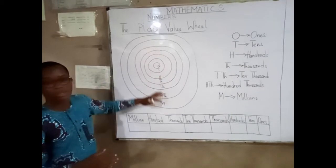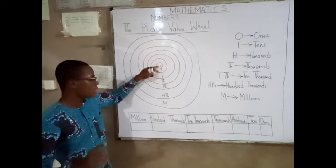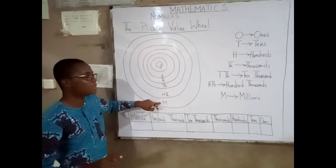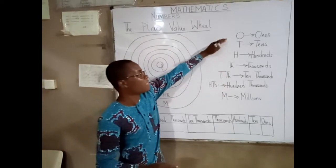You have circles in it. It consists of seven circles. The smallest is the ones, the biggest is the millions. These are the place values.